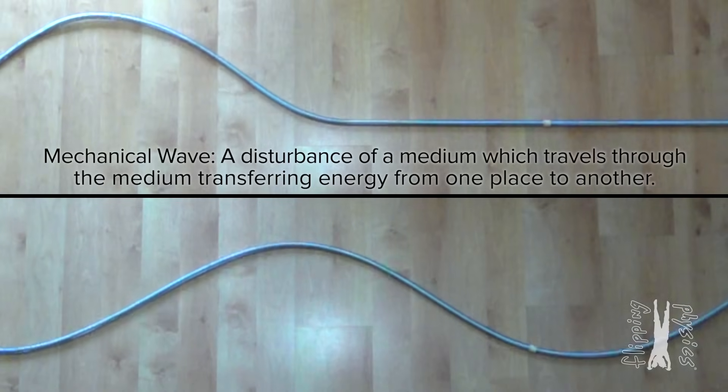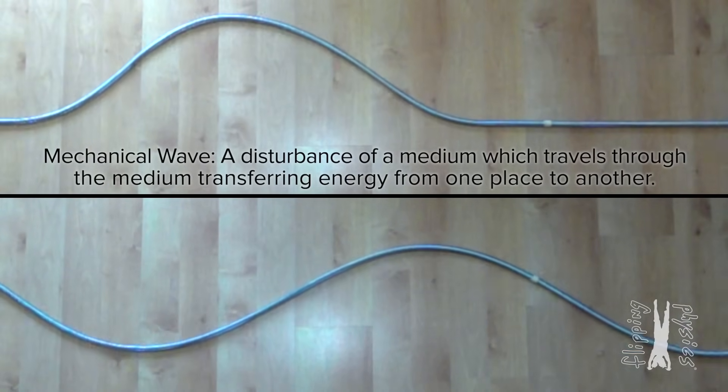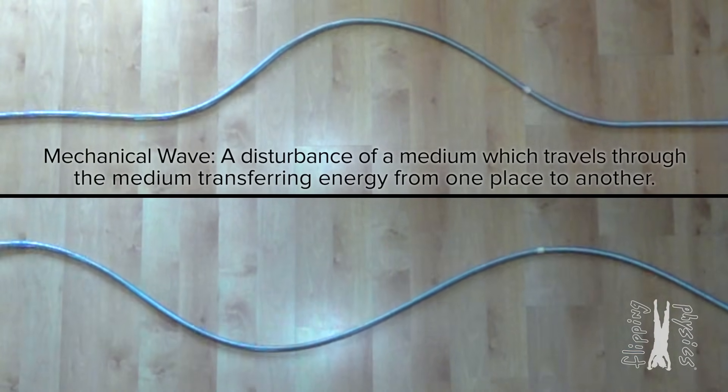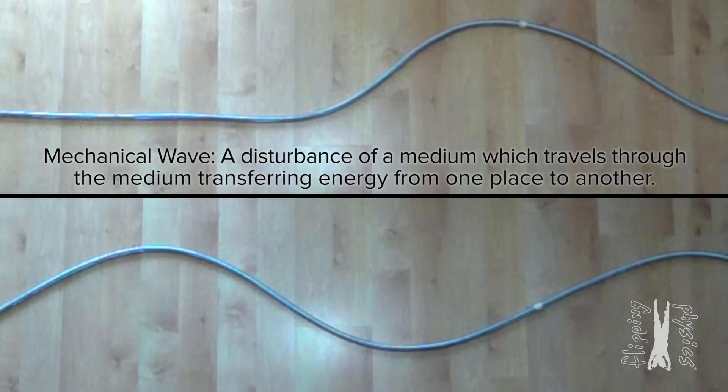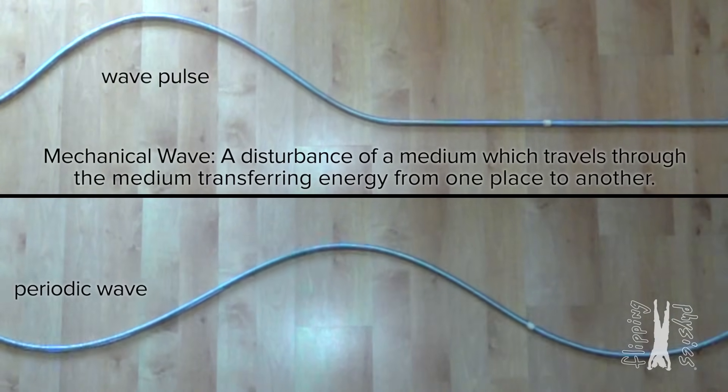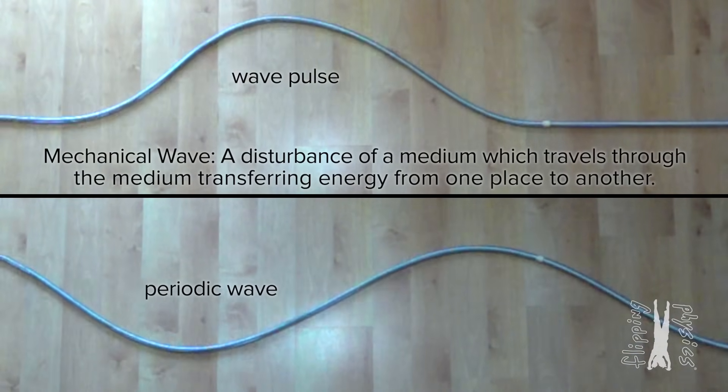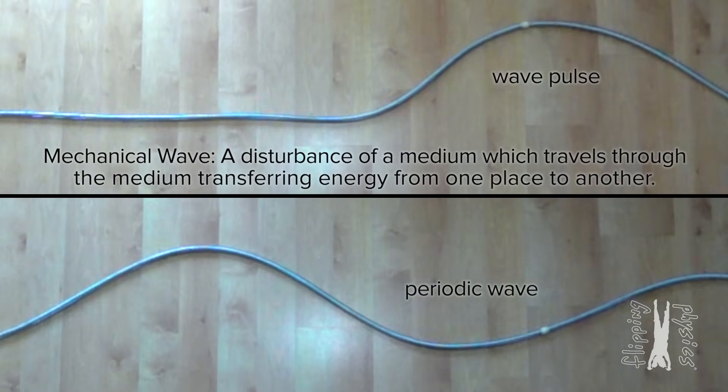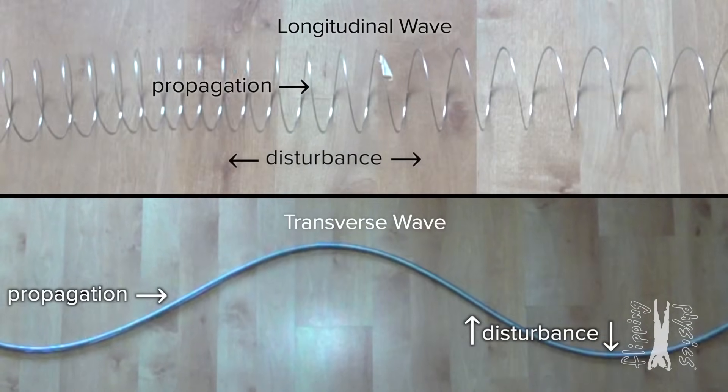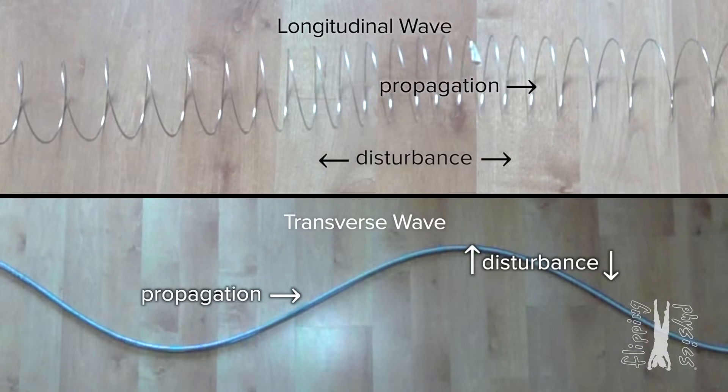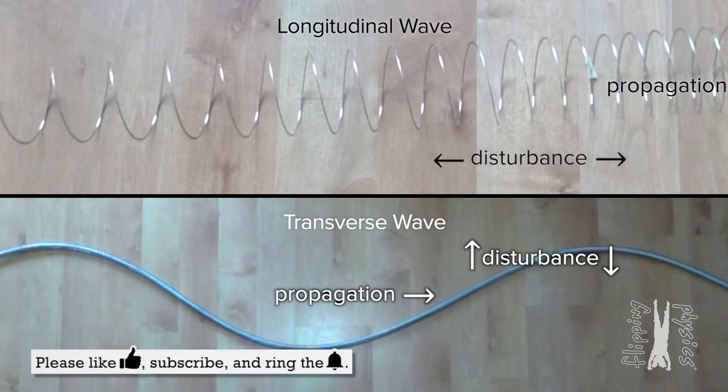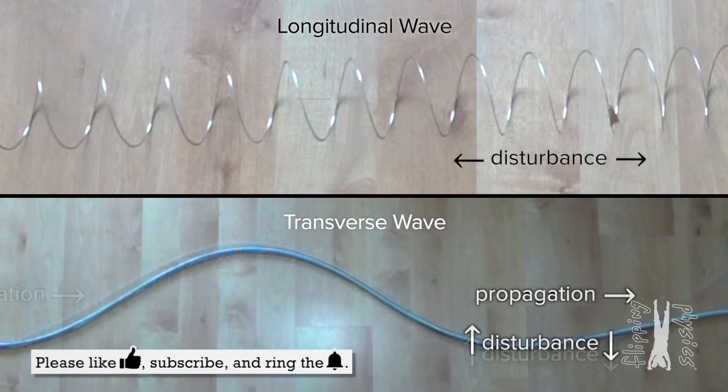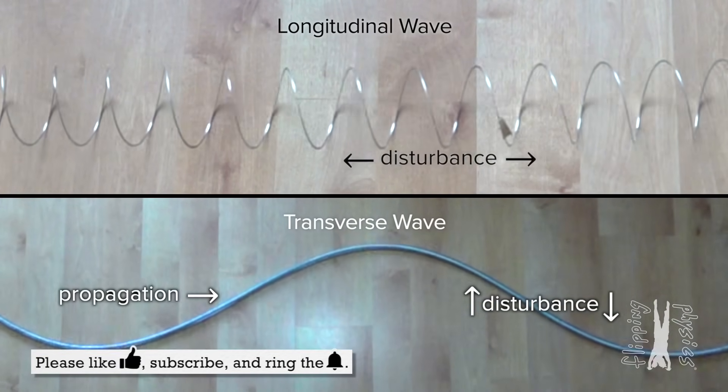To review, we learned that mechanical waves are disturbances of a medium which travel through the medium, transferring energy from one place to another. We can have a single wave pulse or periodic waves, which are continuous wave pulses. And there are two different types of mechanical waves, transverse and longitudinal. The difference has to do with how the disturbance of the medium moves relative to the direction of wave propagation.